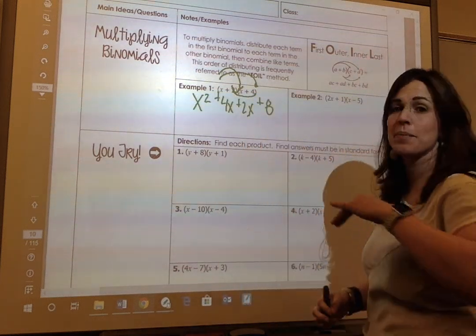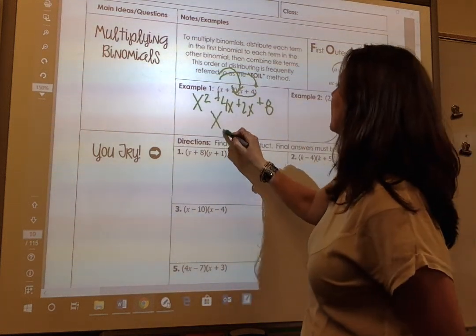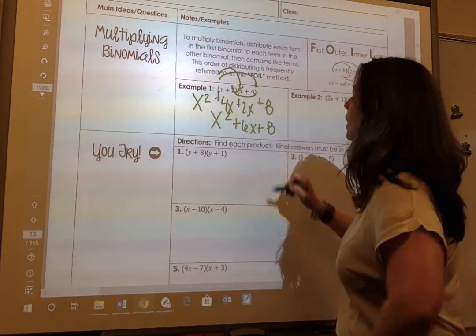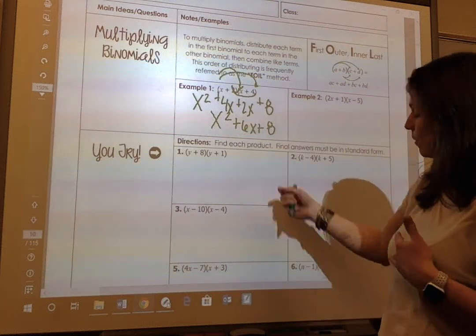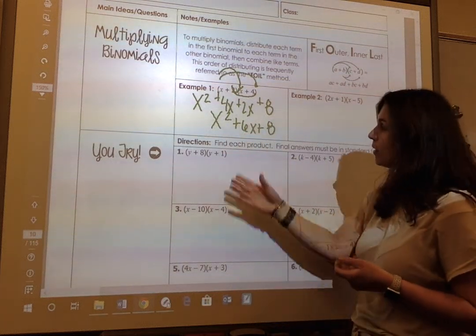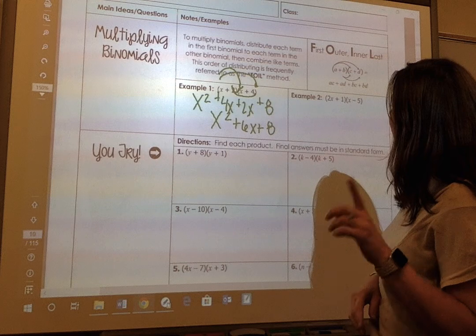And once I get to this step, then I combine like terms, and I get x squared plus 6x plus 8. None of which can be simplified. So I stay here. This is a trinomial. All right. So that's example one.